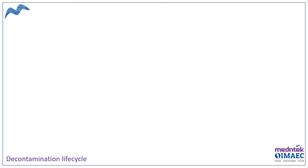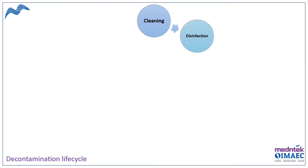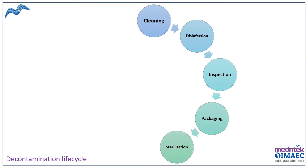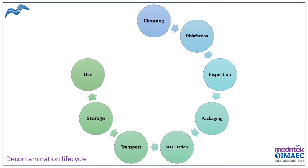The instrument disinfection process starts with decontamination, and the decontamination life cycle proceeds as: cleaning, disinfection, inspection, packaging, sterilization, transport, storage, use, and again safe transport for cleaning.